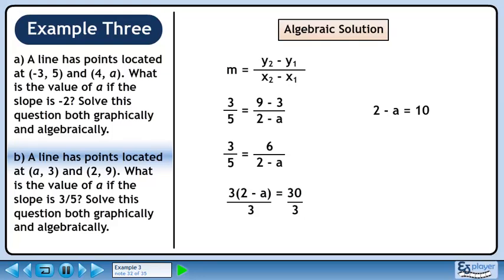This gives us 2 - a = 10. Bring 2 across the equals to get -a = 8. Divide both sides by -1. The answer is a = -8. This is the same result we obtained earlier when we solved graphically.